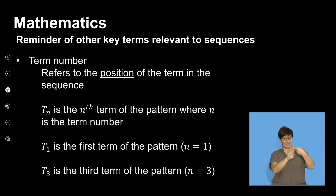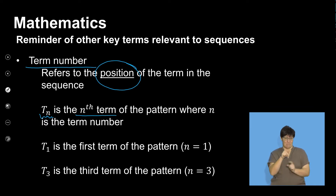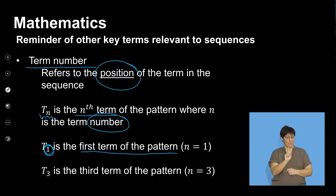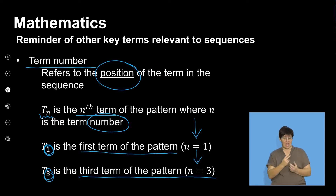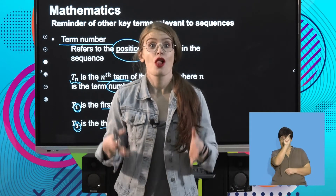The first one we are going to revise is a term number, and that refers to the position of the term in the sequence. TN is the nth term of the pattern, where N is the term number. So if I say T1, that means it's the first term of the pattern. T3 means it is the third term of the pattern. We can see T1 had N equal to 1, and T3 had N equal to 3. So if I said T63, that would be the 63rd term of the pattern.